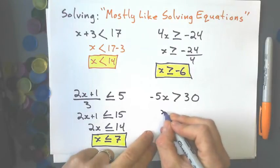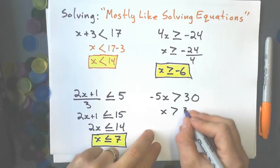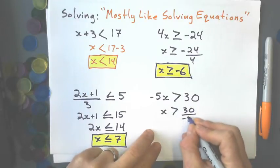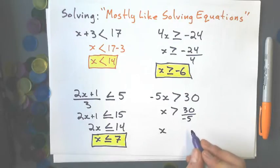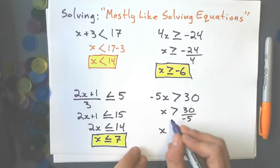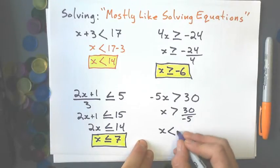So to solve this one, the first thing I do is I divide by the coefficient, 30 divided by -5, and what happens when—and I'll show you why in a minute—what happens when I divide by a negative number, my sign changes direction. So it goes from a greater than to a less than, and 30 divided by -5 is -6.